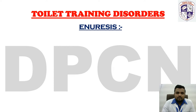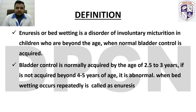The first toilet training disorder is enuresis. Enuresis, or bed wetting, is a disorder of involuntary urination in children who are beyond the age when normal bladder control is acquired. Bladder control is normally acquired by the age of 2.5 to 3 years.